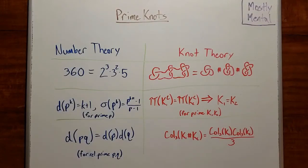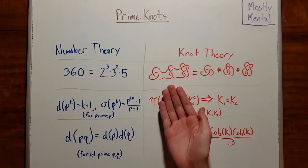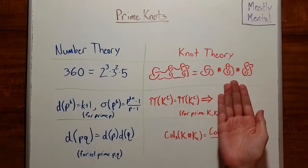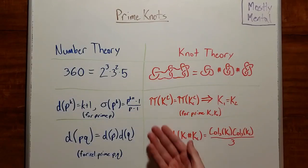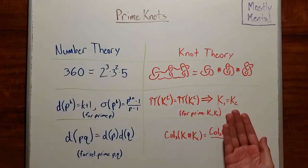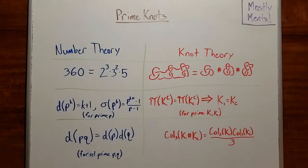For a knot theorist, prime knots serve the same function. Every knot can be broken down into its prime components. Prime knots are often well behaved with respect to knot invariants, so they're easier to study. And most invariants combine nicely when we consider their primes, which lets us understand knots more generally.